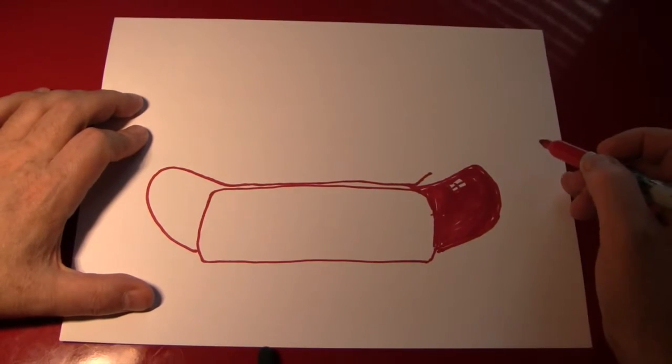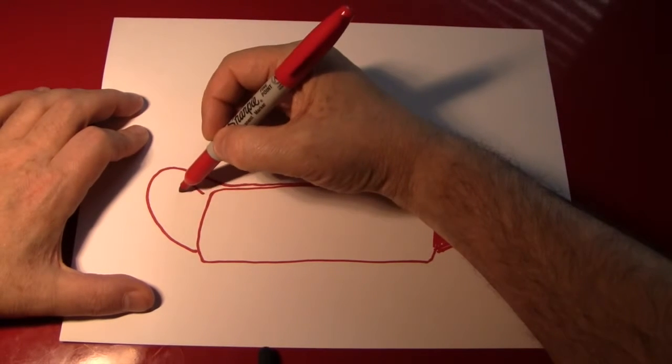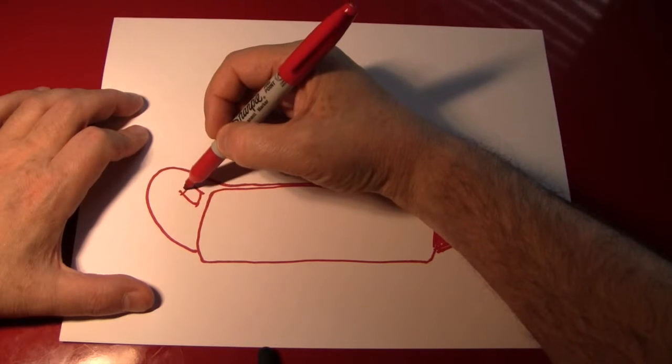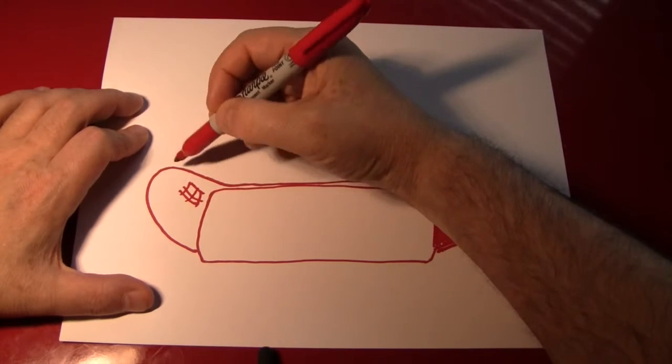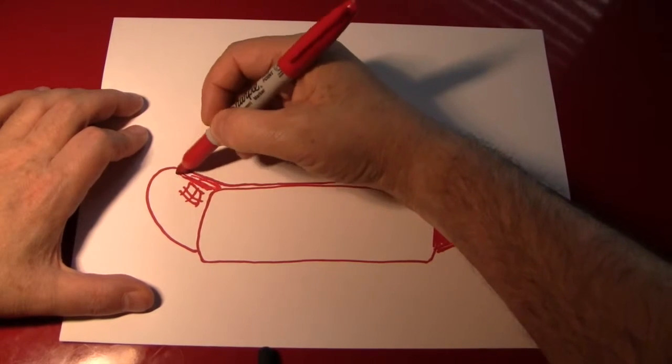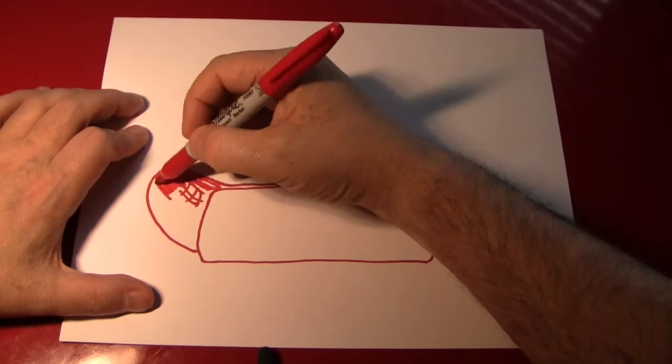Next we're going to want to color in the other side of the hot dog. And you can do the same thing over here. Make a little window shape. Try to make it match the shape of the hot dog. You'll probably do a better job than I did. And color it in.